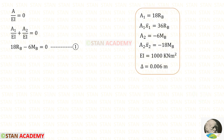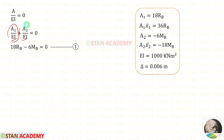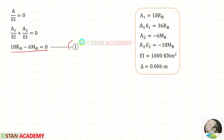At either support A or support B there is no slope, so the sum of areas divided by EI equals zero. Since EI is constant and common to both terms, we can take EI to the other side giving zero. Applying the values of Area 1 and Area 2: 18Rb − 6Mb = 0. This is equation 1.